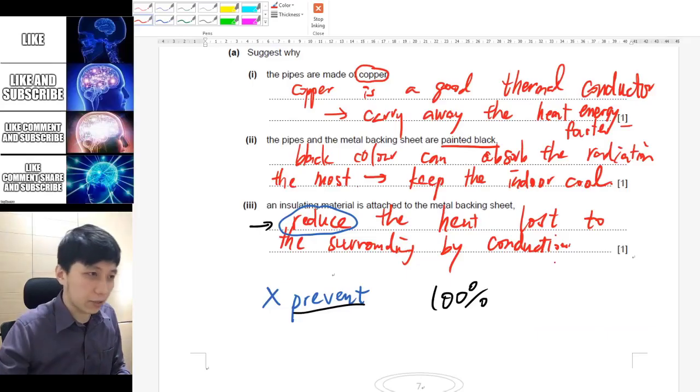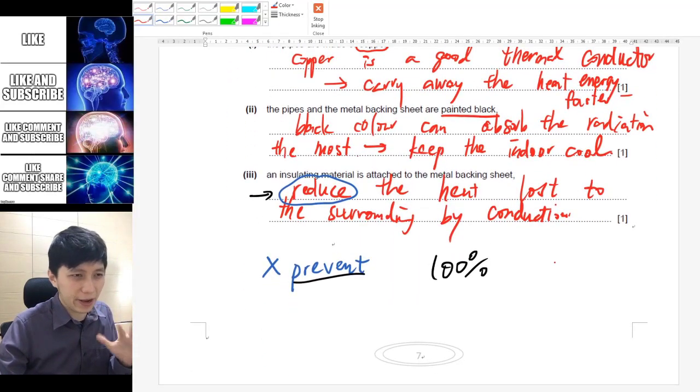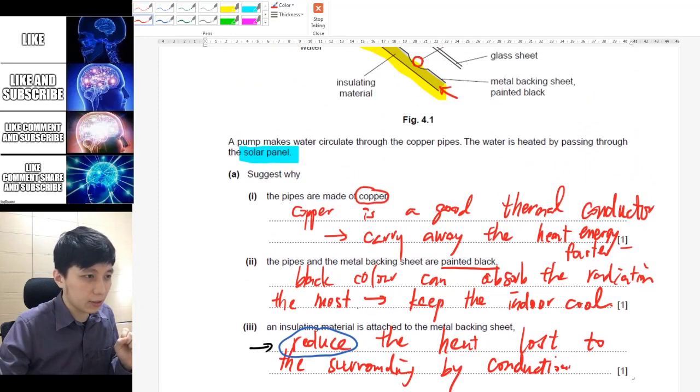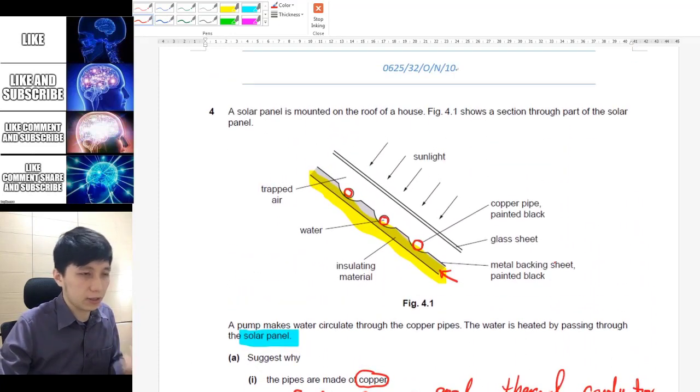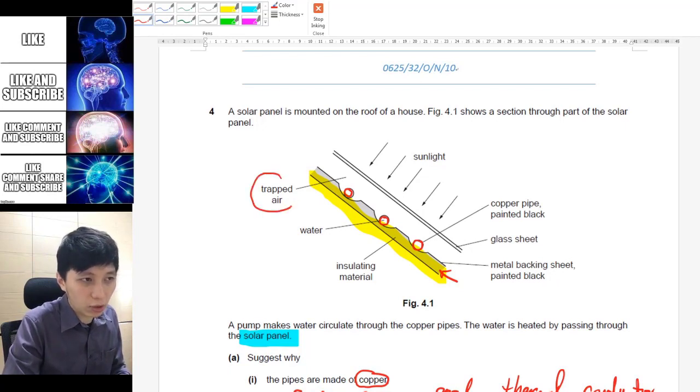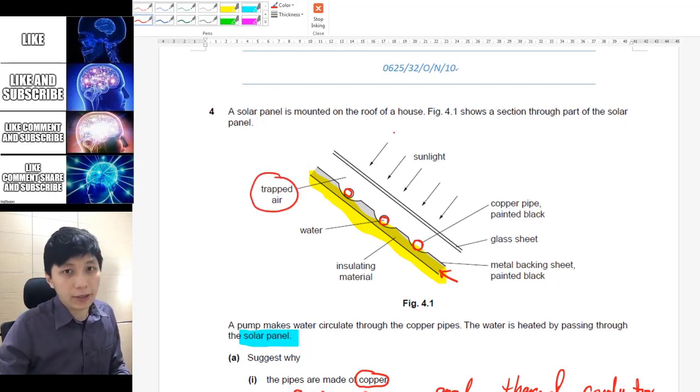Okay, okay, back to here. Lastly, actually there's a part, I don't know why it didn't get printed, but there is part four from the past paper asking you why we need that trapped air. Think about it.